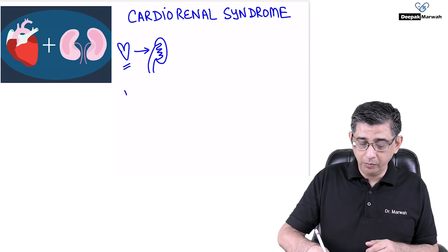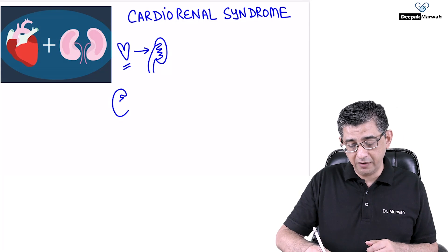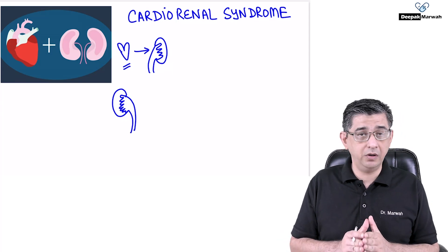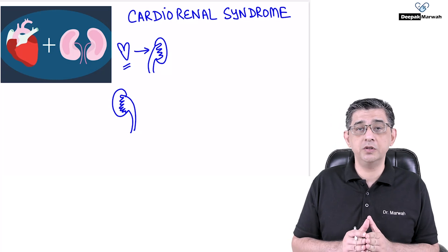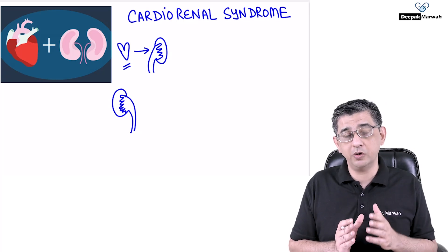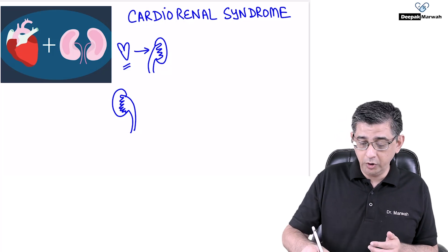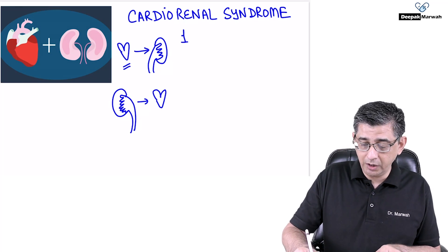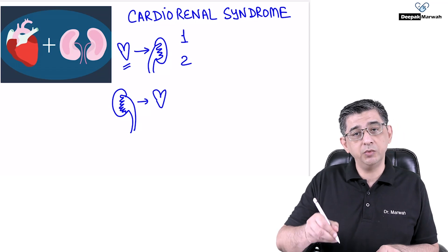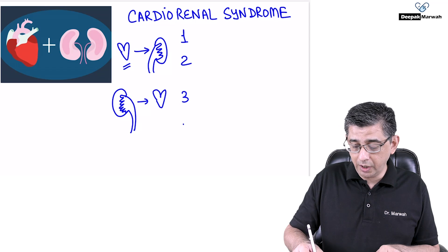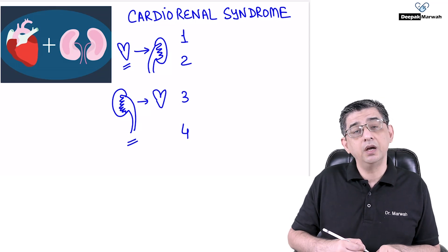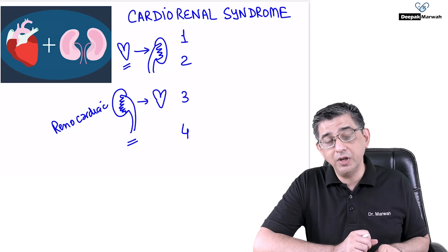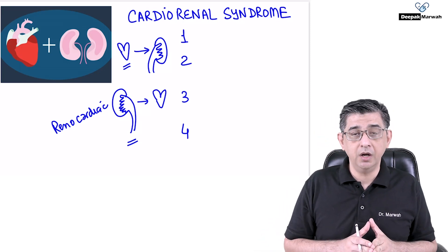In contrast, when it comes to Type 3 and Type 4, the problem starts from the kidney. Say the patient has diabetic nephropathy — I had suggested transplantation or recurrent hemodialysis, but the patient didn't follow either advice. In all patients of CKD, there will be hyperaldosteronism causing volume overloading, which will definitely affect the heart. To remember this, use the term 'renal cardiac' for Type 3 and Type 4, where the problem stems from the kidney.